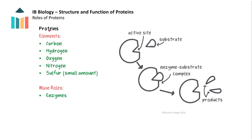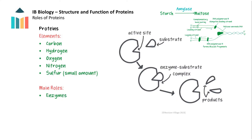Proteins contain the elements carbon, hydrogen, oxygen, nitrogen, and a small amount of sulphur. The roles of proteins are diverse and include enzymatic activity, for example amylase, the digestive enzyme of starch, and DNA polymerase for DNA replication.